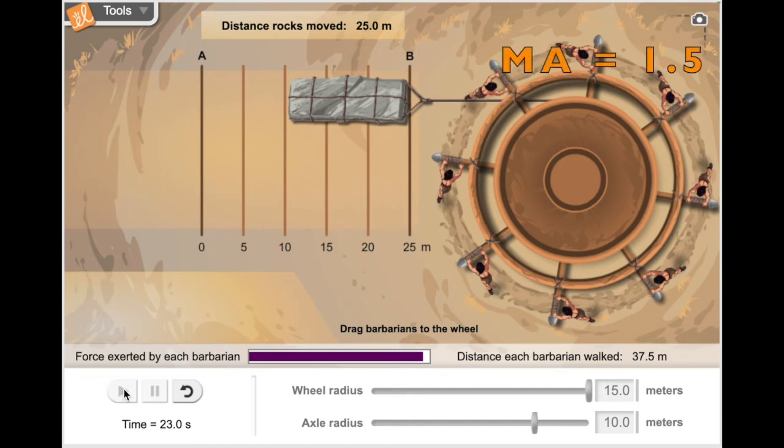The mechanical advantage of this wheel and axle is 1.5. That means it multiplies your force by 1.5 times.